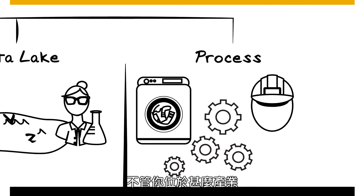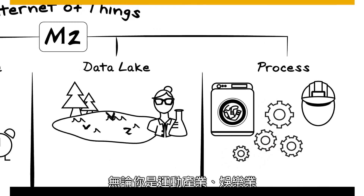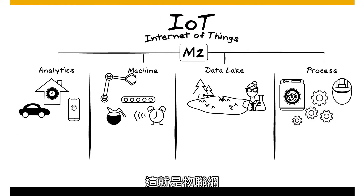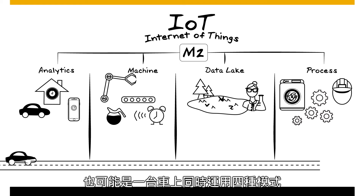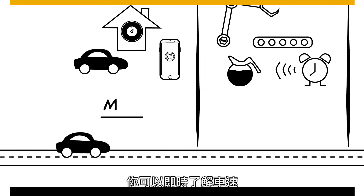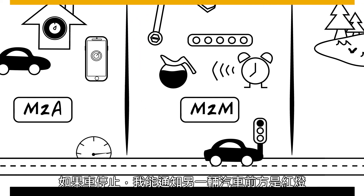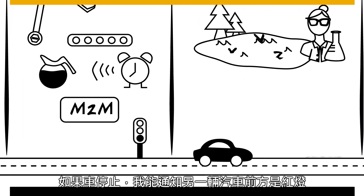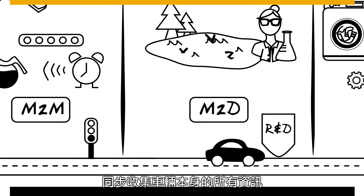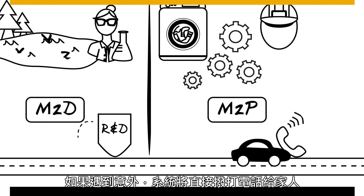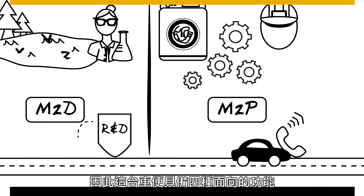Regardless of what industry you're in — sports, entertainment, automotive, consumer products — this is it for IoT. You're doing one of these four things. You might have a car doing all four: how fast is the car going, notify another car if it stops, interact with a traffic light, collect all the car's data for R&D to build better parts, and if it gets in an accident, a phone-home system. One car can actually cover all four.